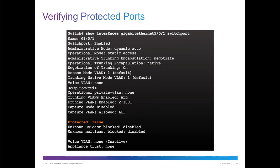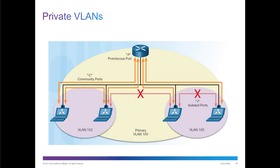Private VLANs are a CCNP-level topic. You can verify protection by doing 'show interface' and looking at the switchport details to see if protection is enabled. With private VLANs, there are promiscuous and community ports — you can set isolated ports that will only communicate with the network device and will not allow communication between one another.